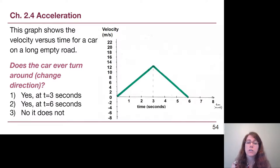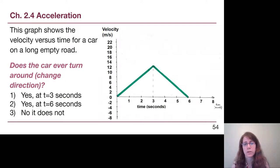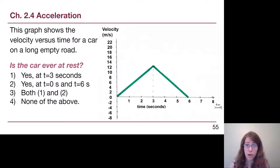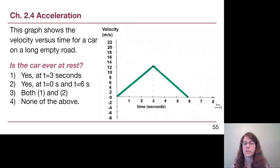Same graph, new question: does the car ever turn around? Turning around would mean velocity goes from positive to negative — driving right then driving left. That does not happen in this situation, so the answer is no. Is the car ever at rest? At rest means zero meters per second. That is true at zero seconds and at six seconds — option two: yes, at zero and six.